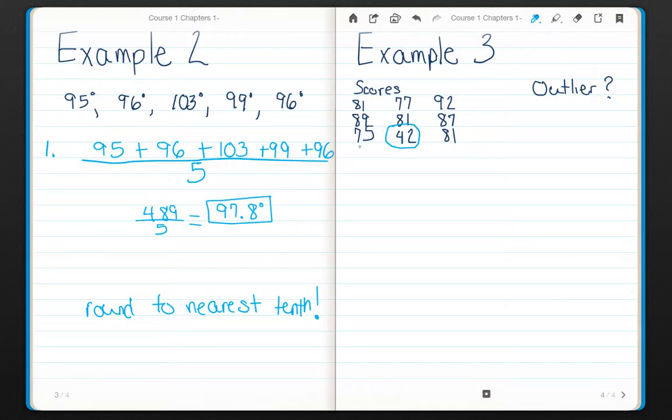All of the rest of my scores are 75, 77, 81, 87, 89, 92. They're all about the same within less than 20 points of each other. But this 42 is significantly lower than all of the rest of them. So my outlier over here is 42.